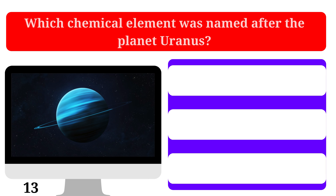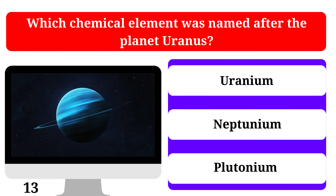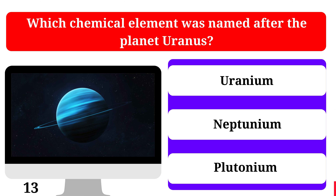Which chemical element was named after the planet Uranus? Uranium, Neptunium, or Plutonium. The correct answer is Uranium.